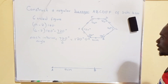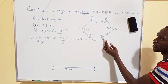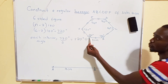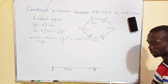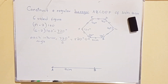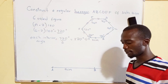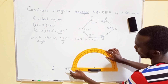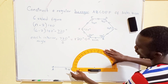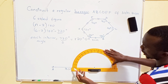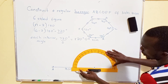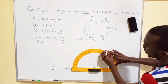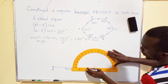From point B, I measure 120 degrees going to point C, and from point A, I measure 120 degrees going to point F. I place the protractor at point B and measure 120 degrees from point B going in the anticlockwise direction. So 120 degrees is at this particular place.